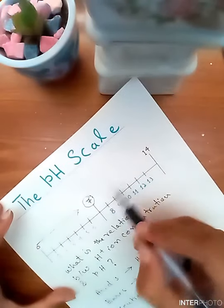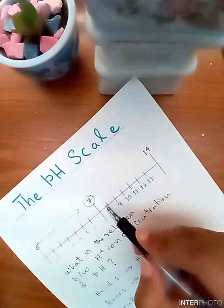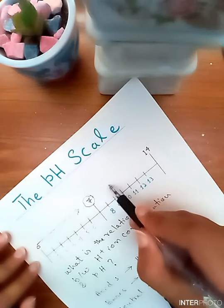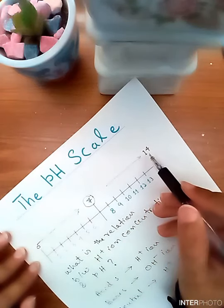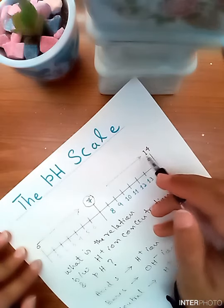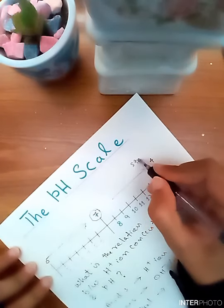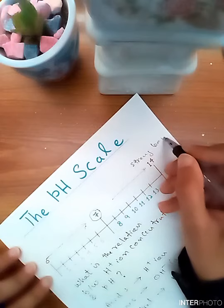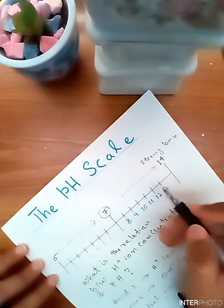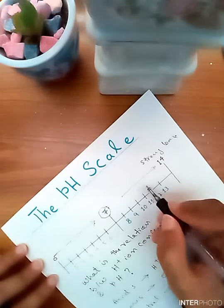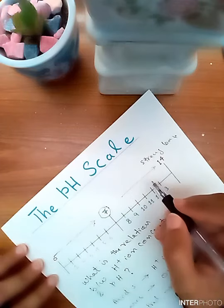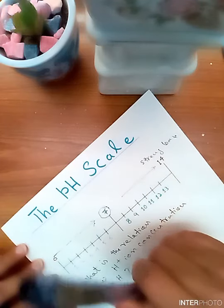Just like that, bases having pH near to 14 or exactly 14 are considered as strong bases. And as the pH approaches 7, then the base is considered as weak base.